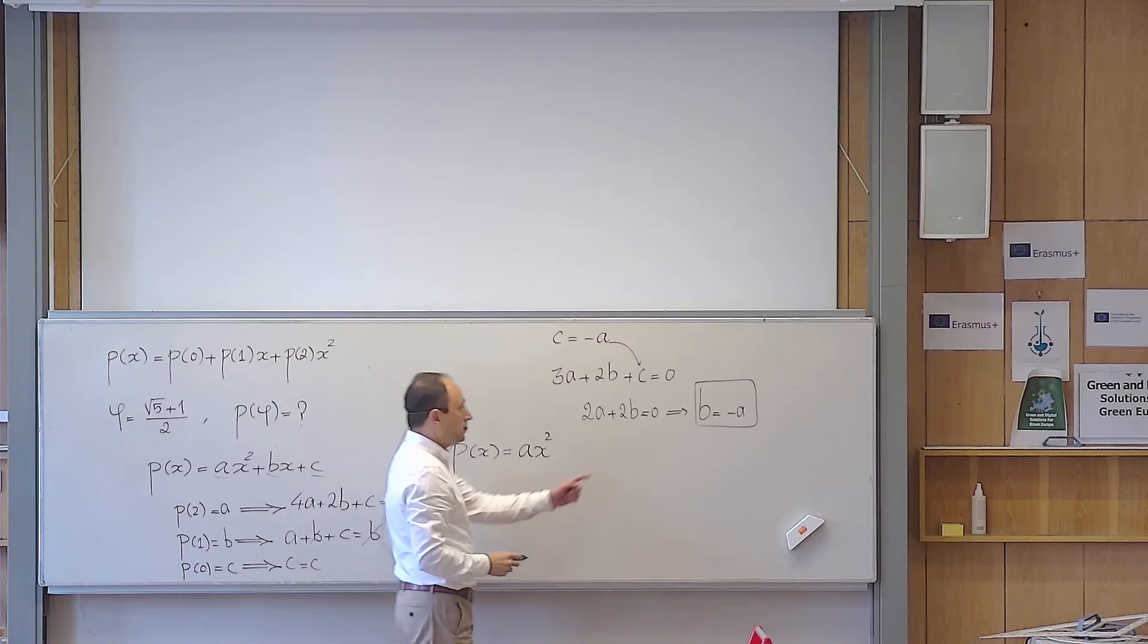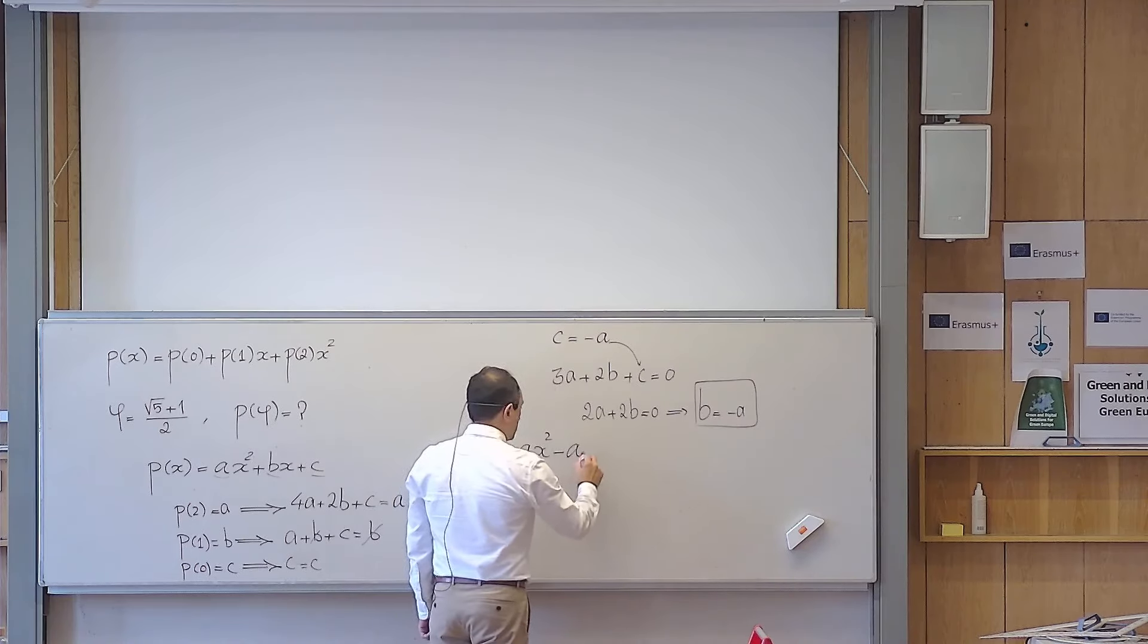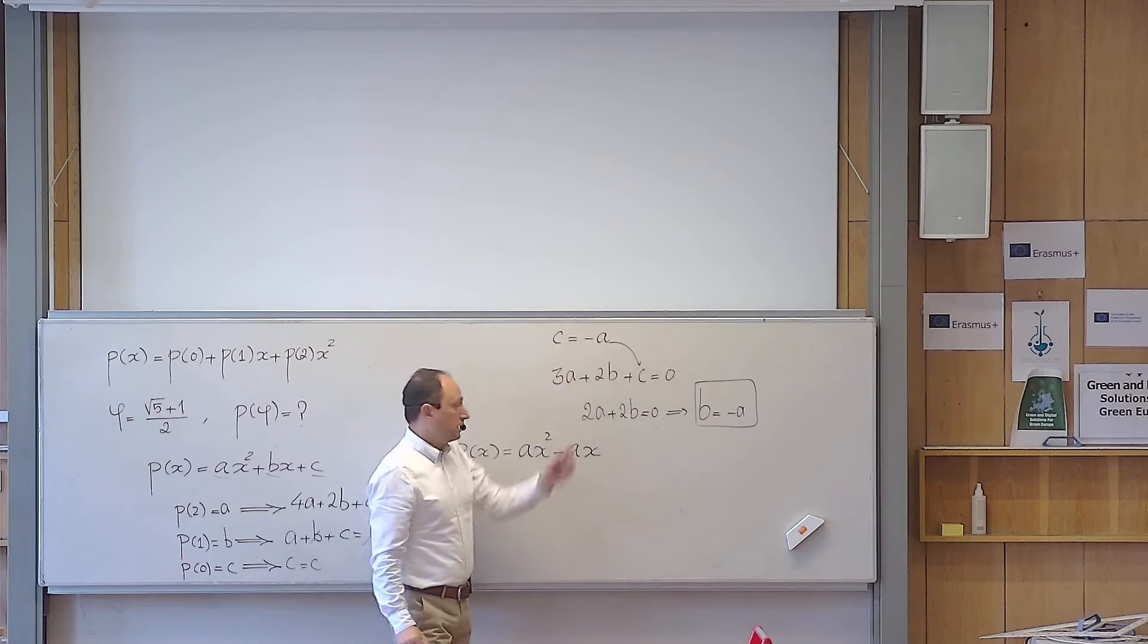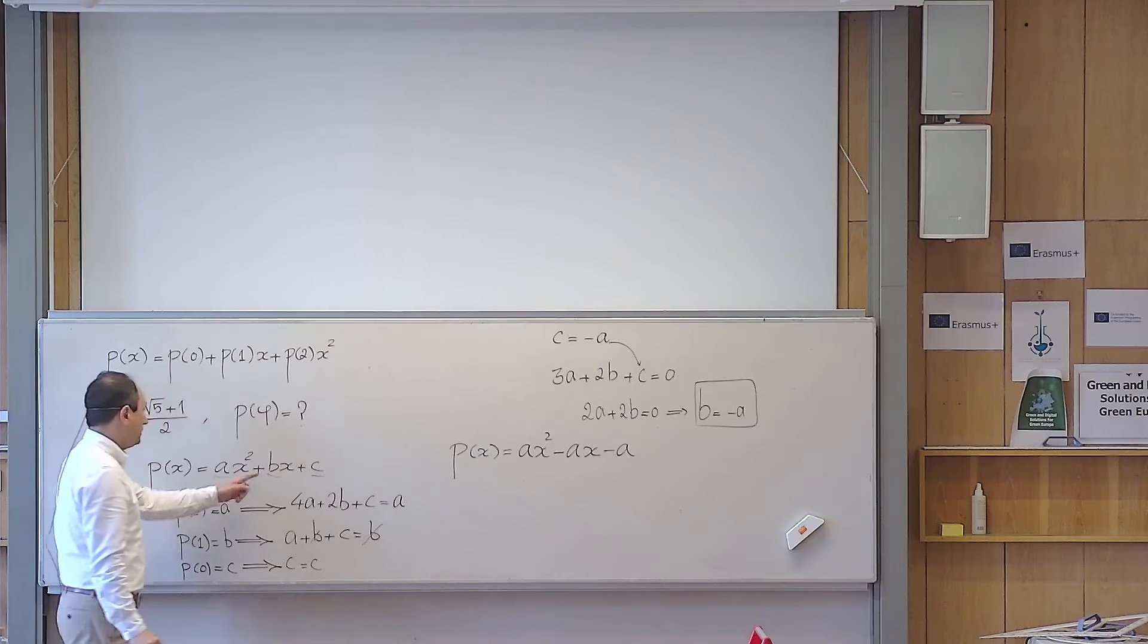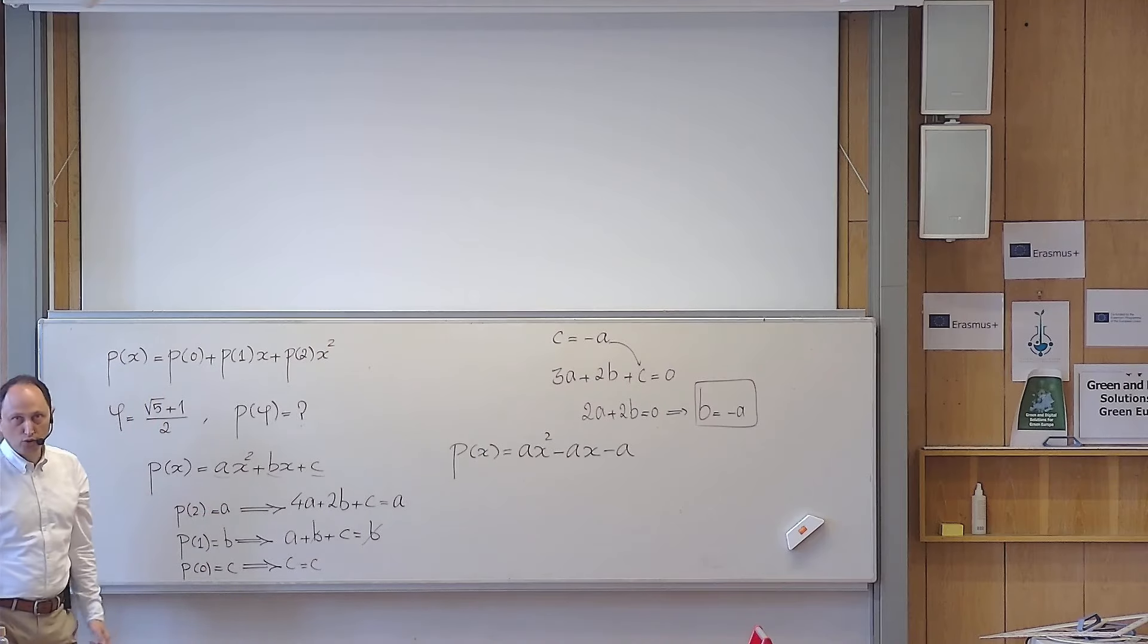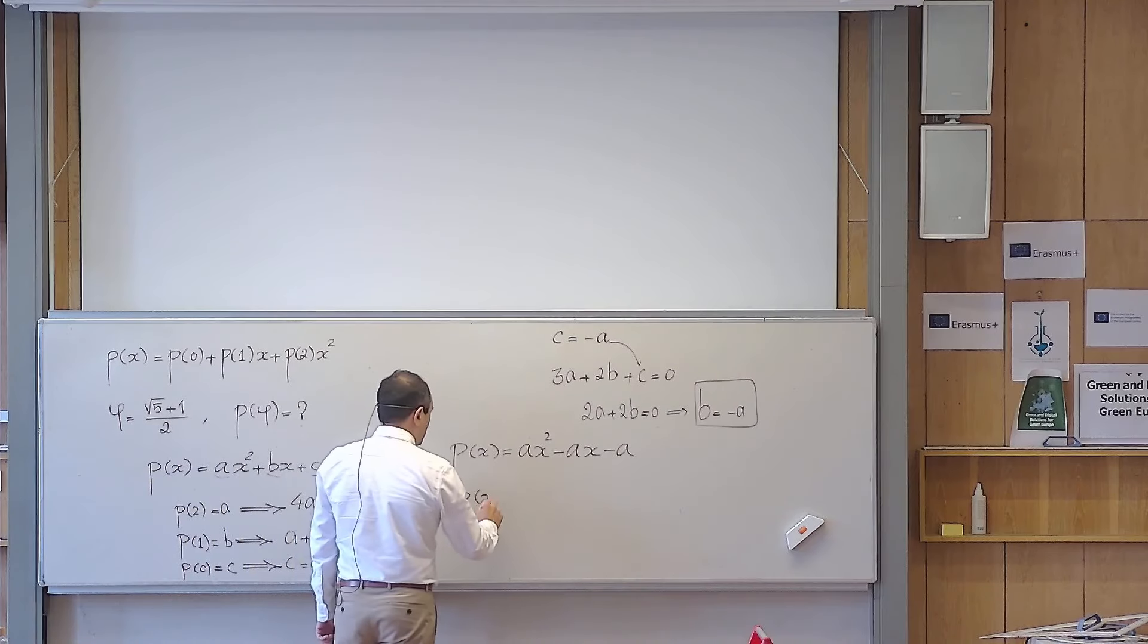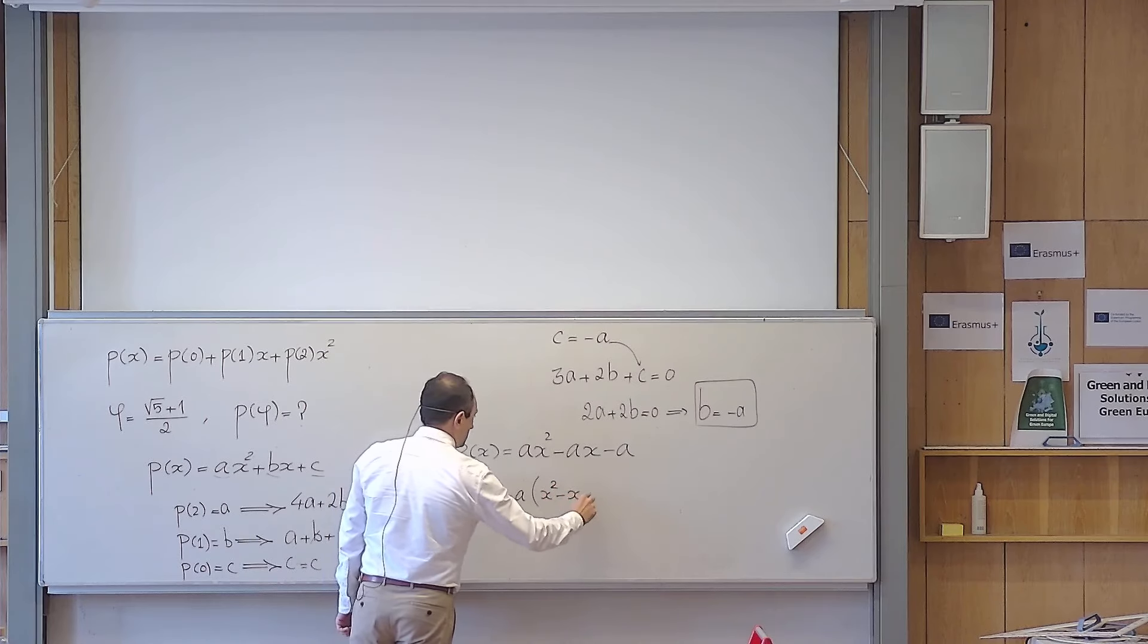But instead of b, I can also put minus a. So it becomes minus ax. And instead of c, I can also put minus a. This is better than nothing because instead of having three unknowns, I have only one unknown a. It is not hard to see that you can factor a out and then you will get x squared minus x minus 1.